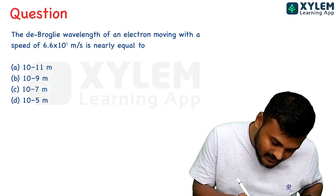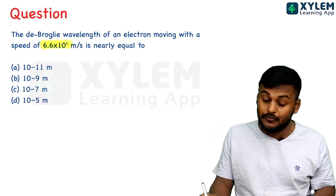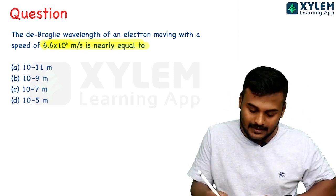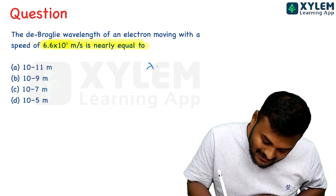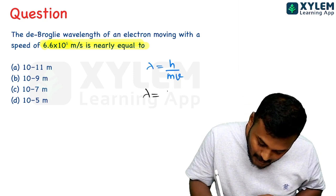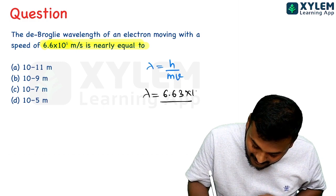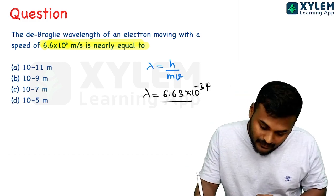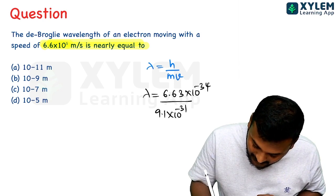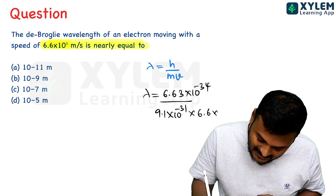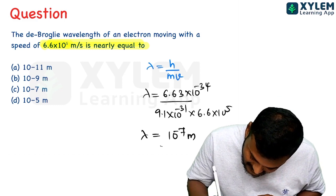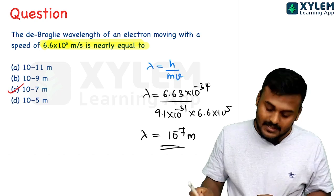The de Broglie wavelength of an electron moving with speed 6.6 into 10 raise to 5 meter per second is nearly equal to? Using lambda equals h by mv: lambda equals 6.63 into 10 raise to minus 34 divided by mass of electron 9.1 into 10 raise to minus 31, multiplied by velocity 6.6 into 10 raise to 5. Lambda equals 10 raise to minus 7 meter. Option C is the right answer.